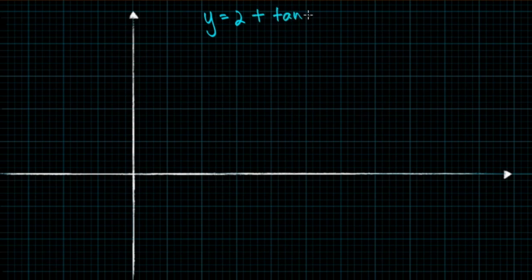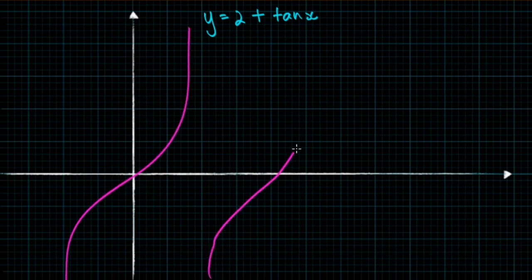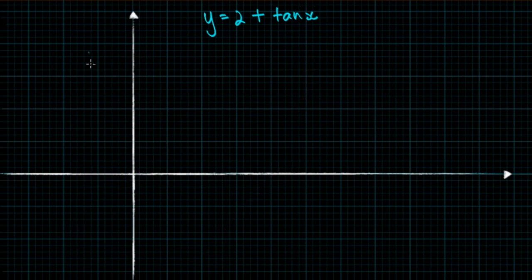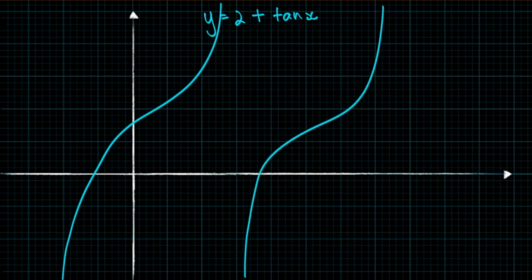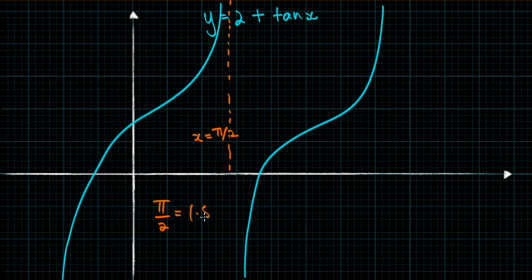In order to check whether our function has an asymptote or a root in the interval, let's draw y equals 2 plus tan x. We know y equals tan x looks like a repeating tangent curve, and y equals 2 plus tan x is exactly the same but translated up by 2. Since the transformation is only a vertical translation, the asymptote is still at x equals pi over 2. Pi over 2 is approximately 1.57, which indeed lies in the range of our interval. Therefore the change of sign is caused by this asymptote, not a root.